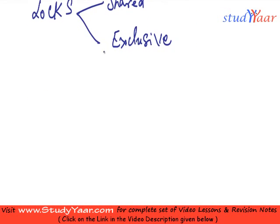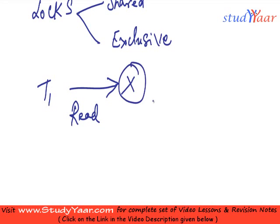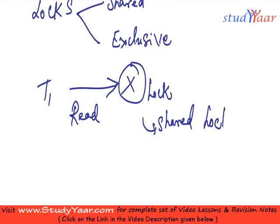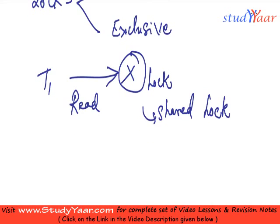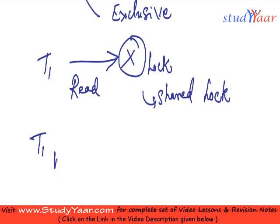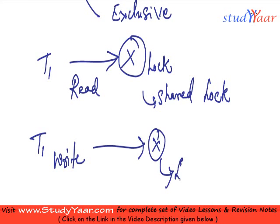In a locking-based protocol, if my transaction wants to read data item X, it is going to lock X with a shared lock. When a transaction needs to write X, it is going to apply an exclusive lock on X.